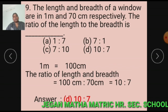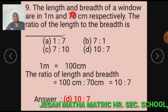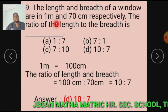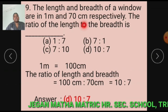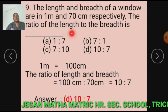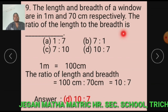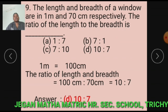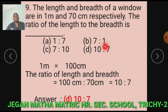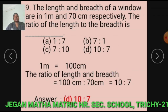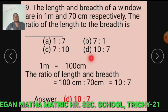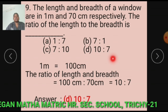Question number 9: The length and breadth of a window are 1 meter and 70 cm respectively. The ratio of length to breadth is dash. Option A: 1 is to 7. Option B: 7 is to 1. Option C: 7 is to 10. Option D: 10 is to 7.